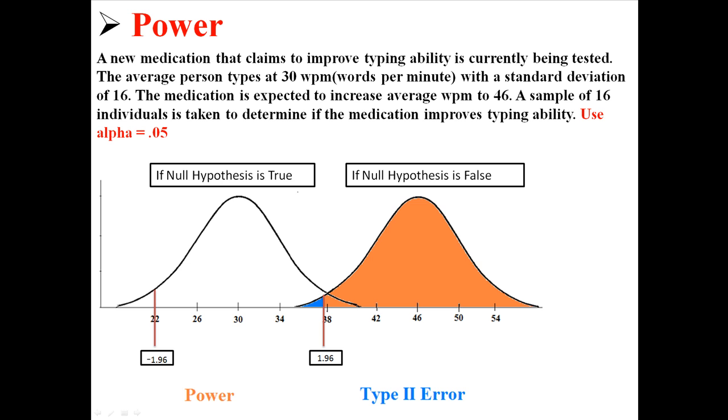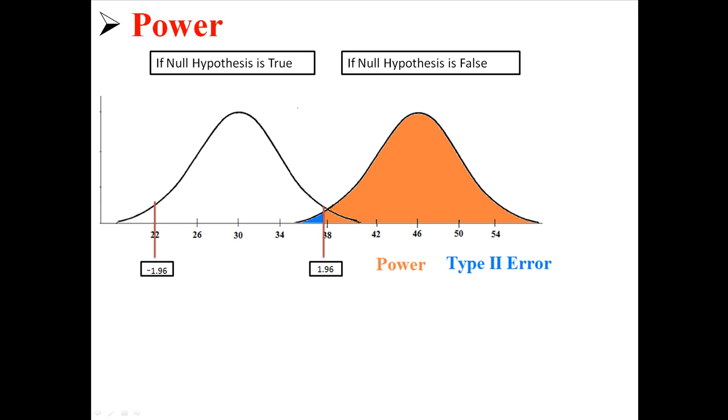Anything left over is the type 2 error. So what we need to do now is calculate what exactly the probabilities are for power and for type 2 error or beta. So I'm going to move that up and now we need to know what number in the distribution on the right is associated with 1.96.